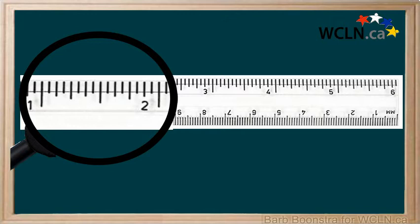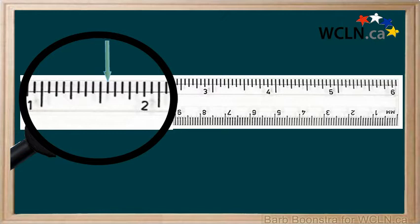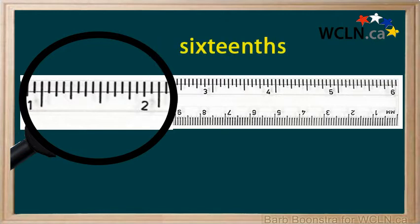The inches here are divided into sixteenths. Count 1, 2, 3, 4, 5, 6, 7, 8, 9, 10, 11, 12, 13, 14, 15, 16. There are 16 divisions in each inch on this ruler.